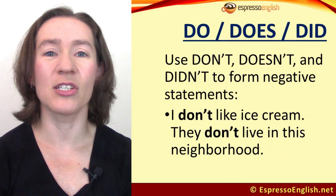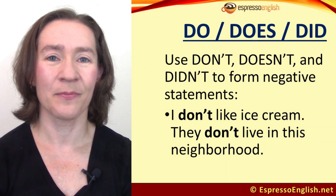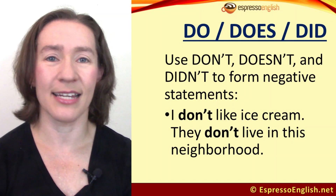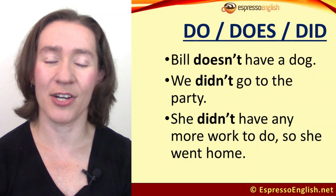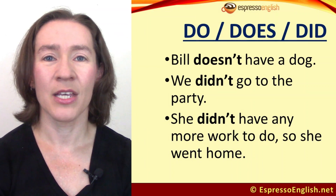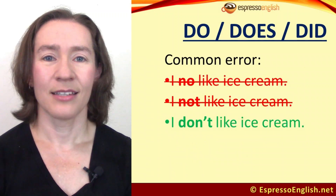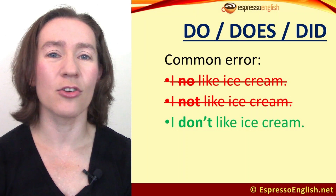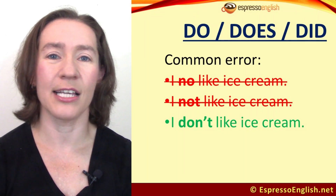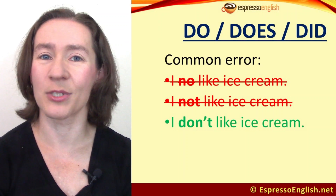What about the negative forms? We use don't, doesn't, and didn't to form negative statements. For example: I don't like ice cream. They don't live in this neighborhood. The bank doesn't open on Saturdays. Bill doesn't have a dog. We didn't go to the party. She didn't have any more work to do so she went home. Watch out for the common error of just using no or not — saying 'I no like ice cream' or 'I not like ice cream' are both incorrect. You need to say 'I don't like ice cream.'